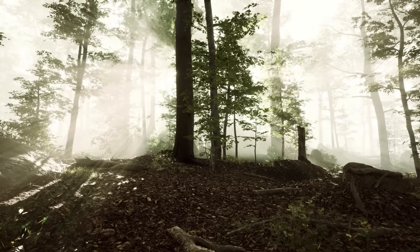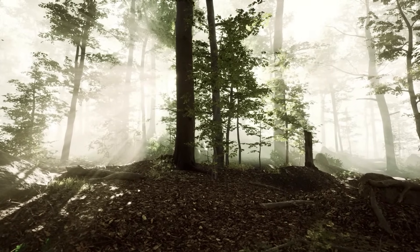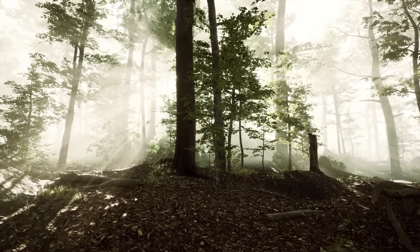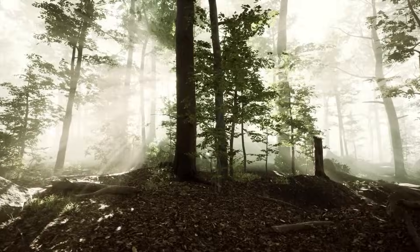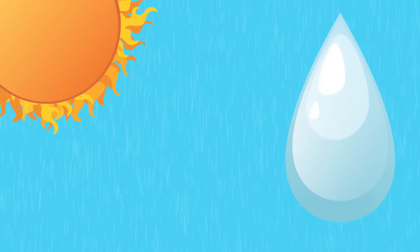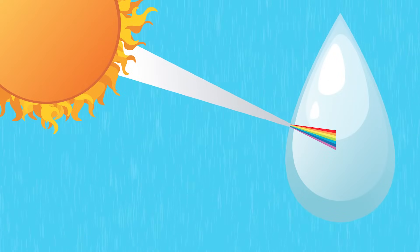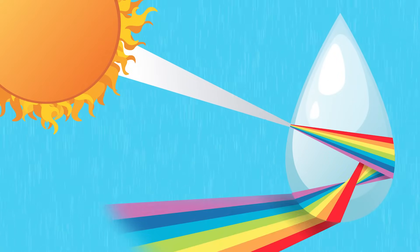The light from the sun is actually a mixture of all the colours in the visible light spectrum. We call this white light. A rainbow is caused by light being refracted when entering a droplet of water, then reflected inside on the back of the droplet and refracted again when leaving it.